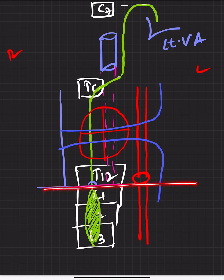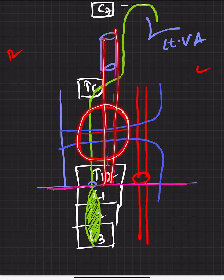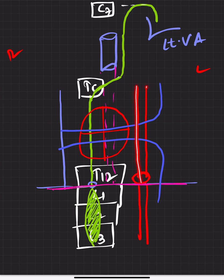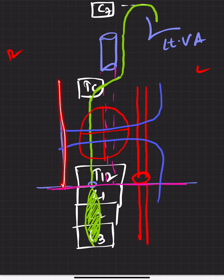So the posterior relations are the hemi-azygous vein and the accessory hemi-azygous vein. Anteriorly: diaphragm, esophagus, and pericardium. To the left: descending thoracic aorta continuing as abdominal aorta. To the right: azygous vein. These are all the relations of the thoracic duct.